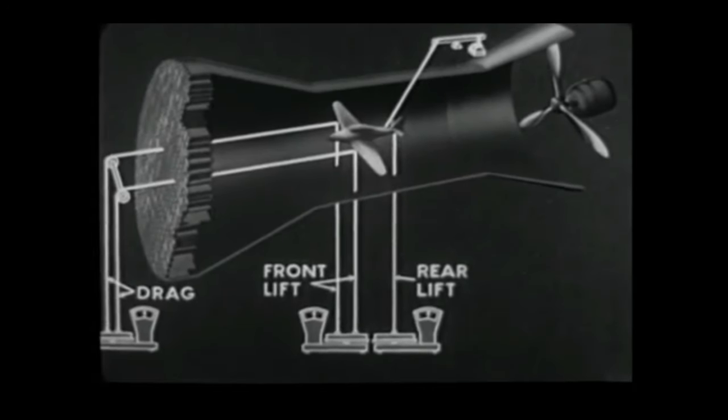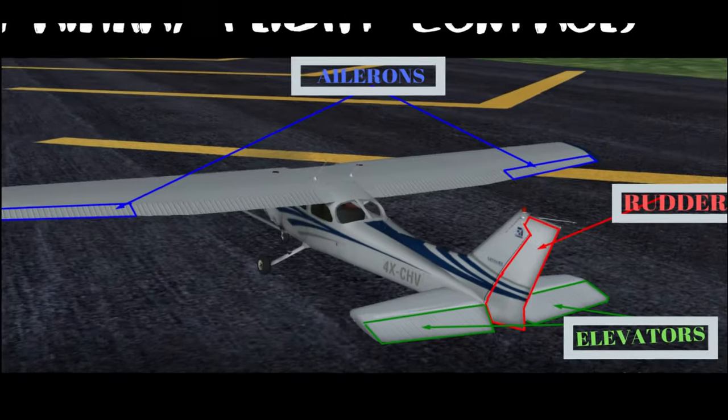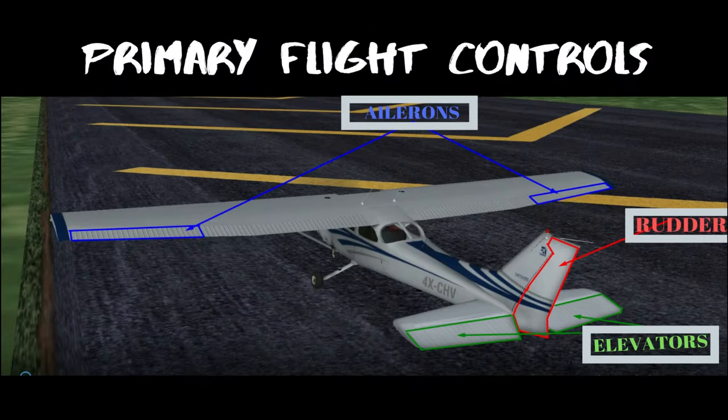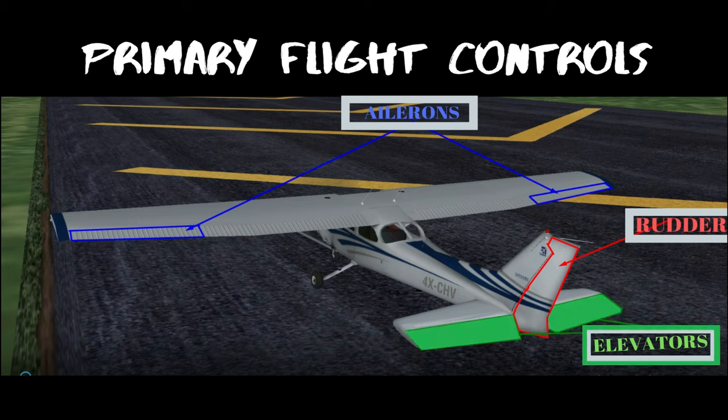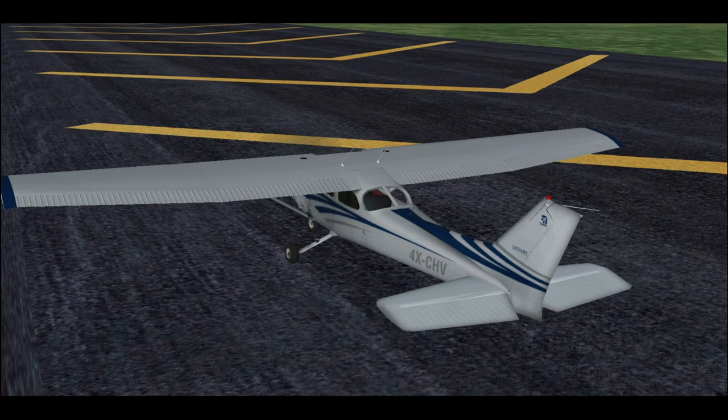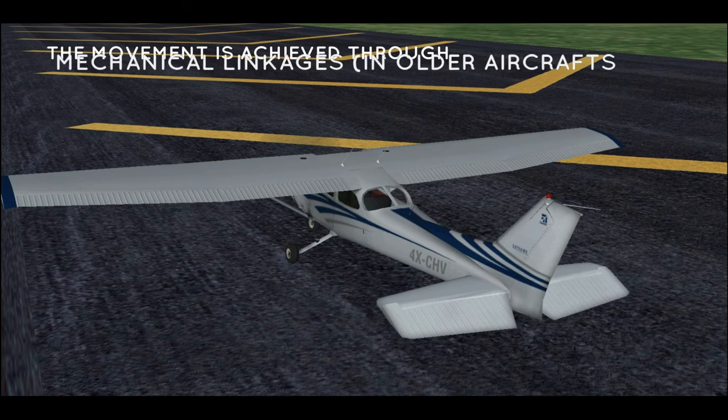All right, let's move on to our next flight control surface: elevator. The elevators are the flight control surfaces that are situated at the tail part of an airplane, exactly on the trailing edge of the horizontal tail, and move up and down simultaneously, unlike the ailerons.